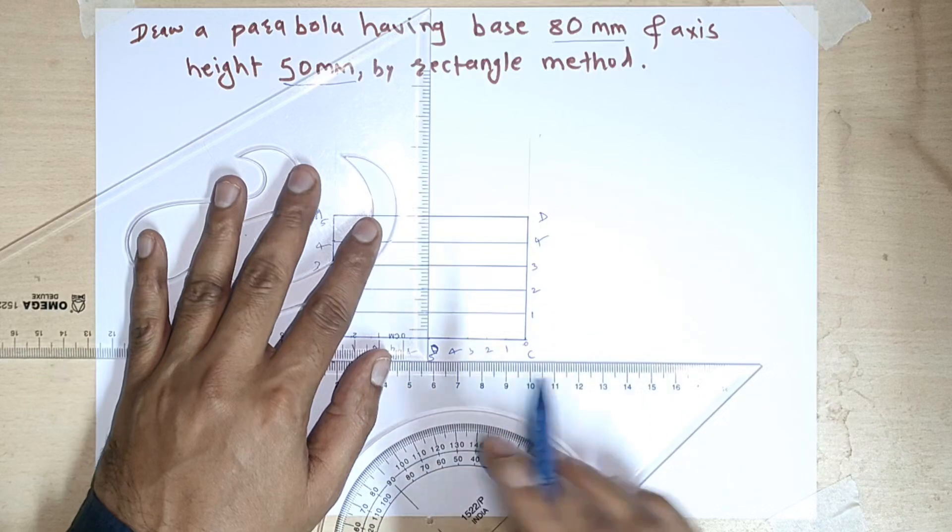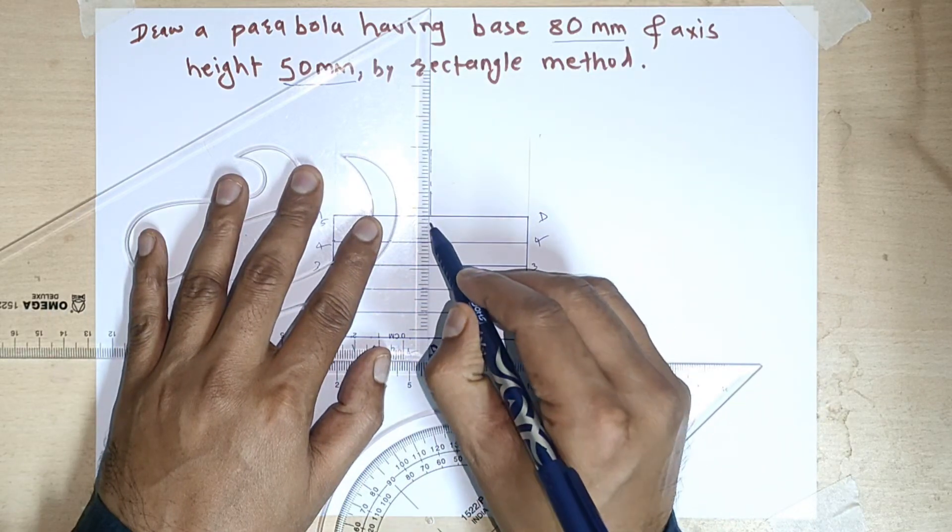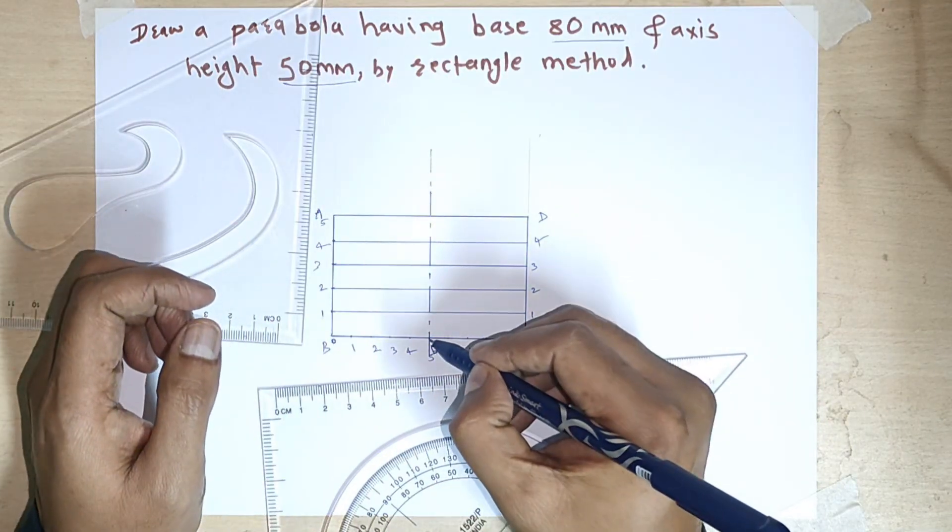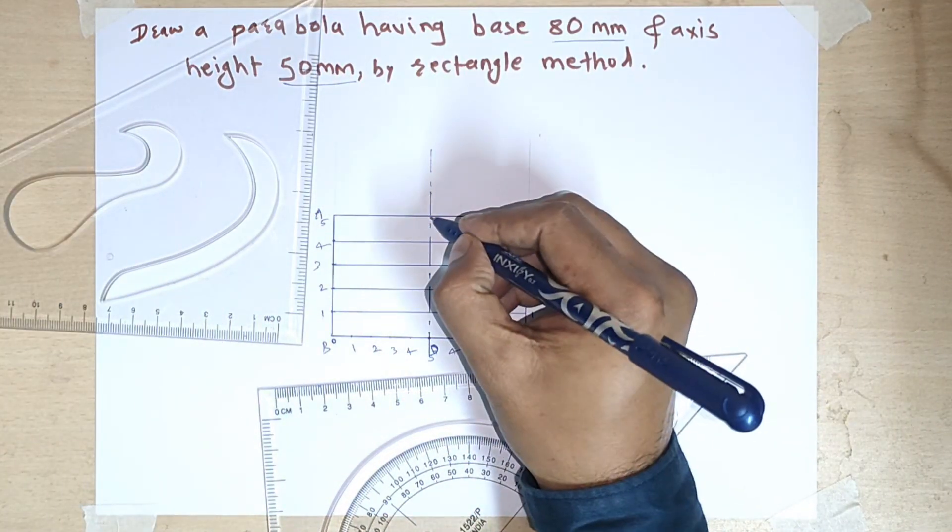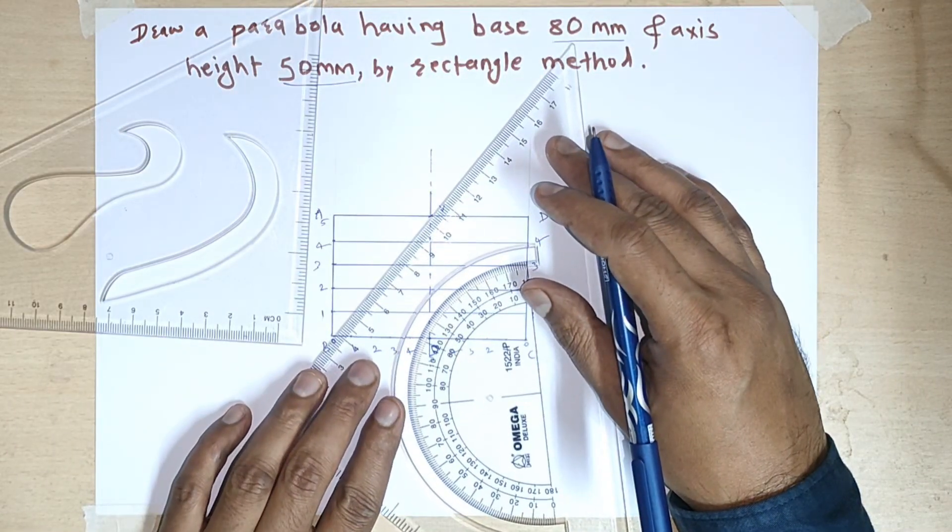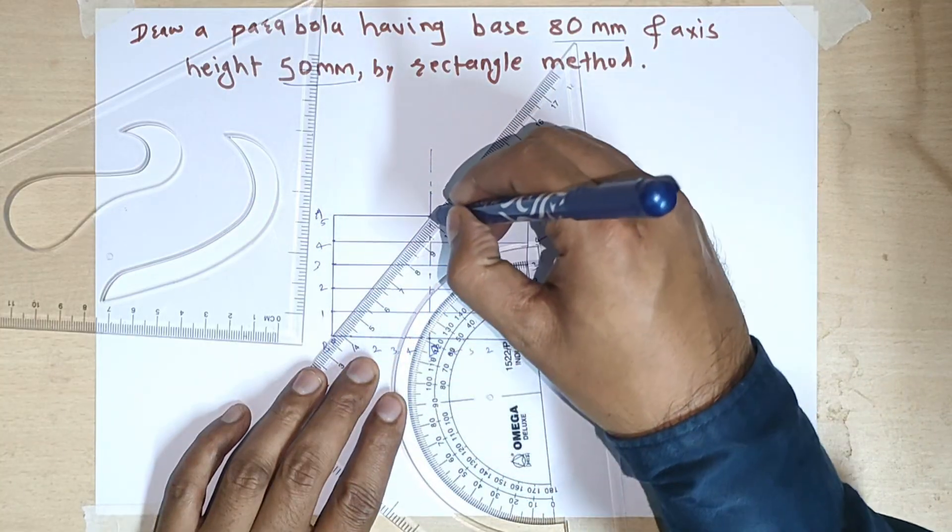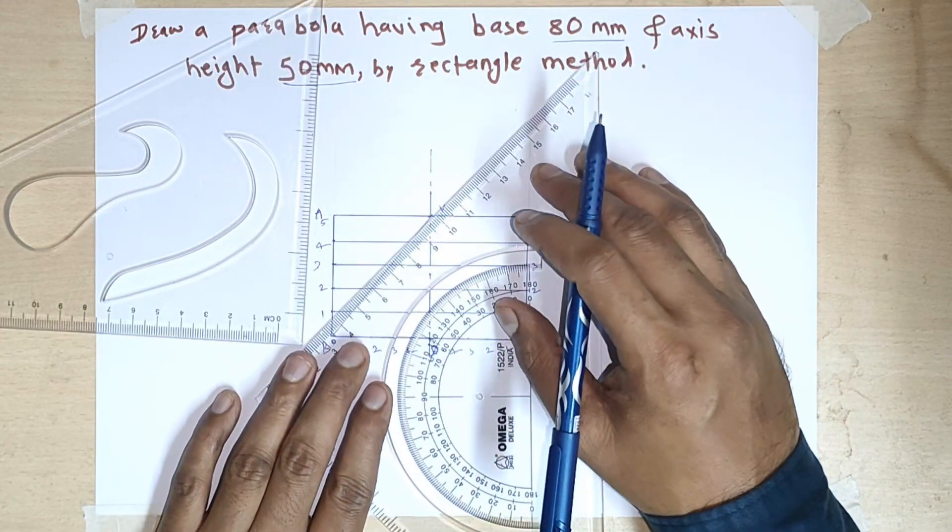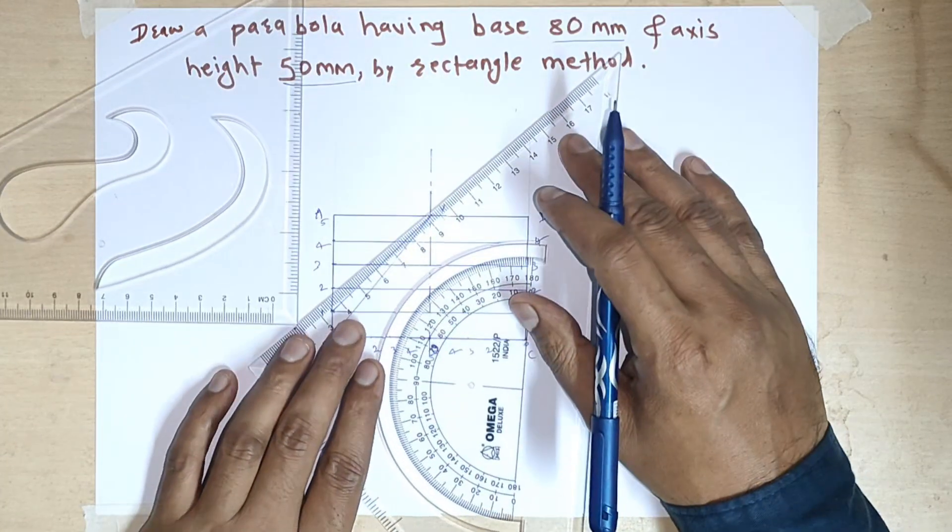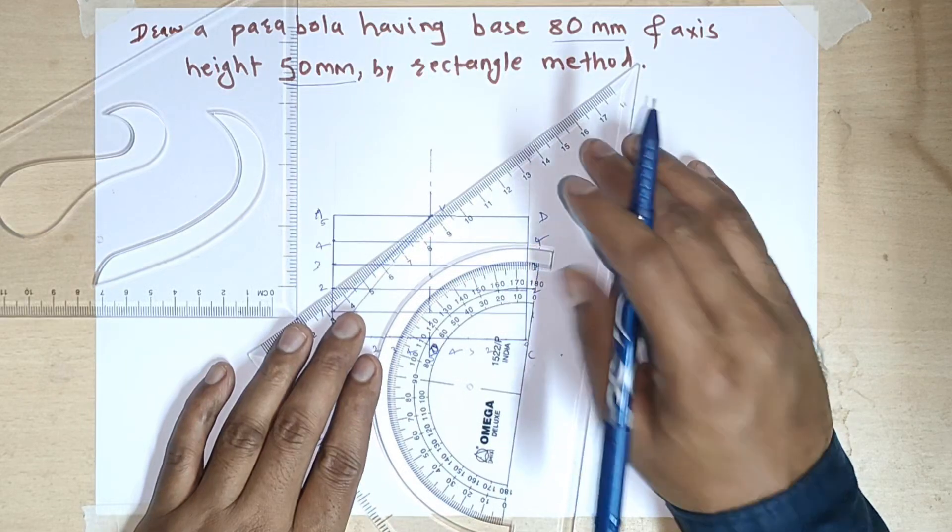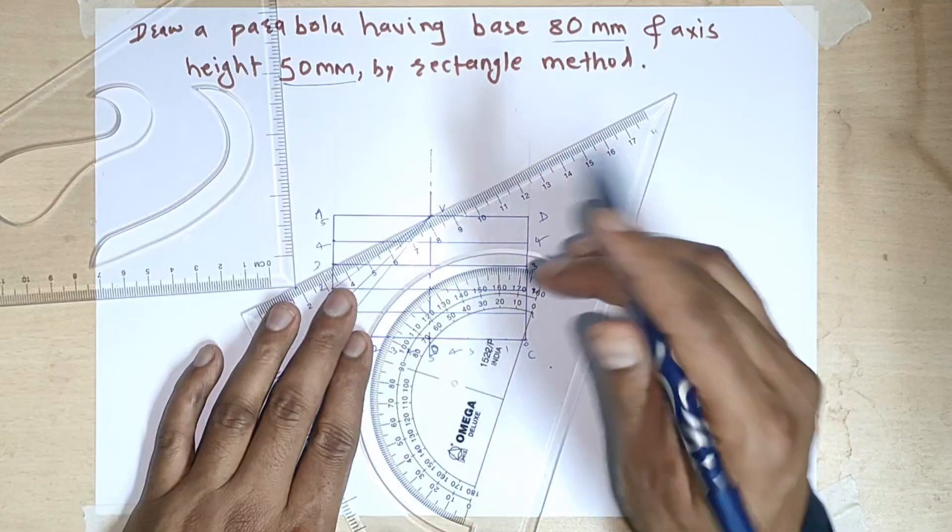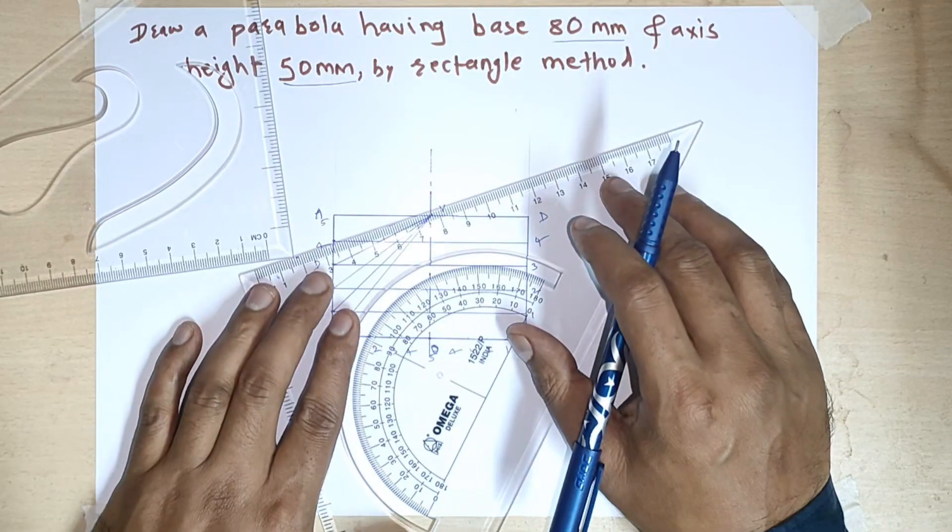This is our center line. So we are drawing it as a center line. Now this point is V point. So join 0 to V. 1 to V, 1 to V, 2 to V, 3 to V, 4 to V.